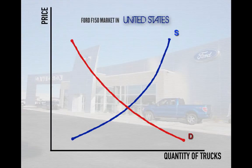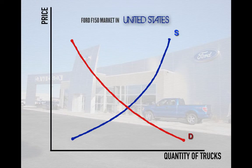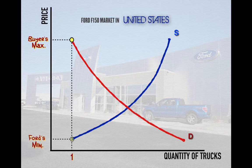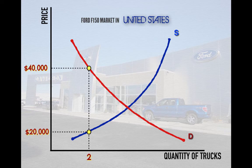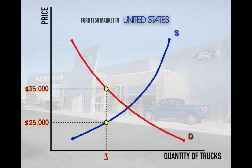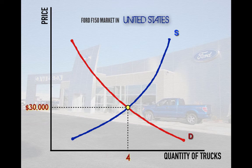Just as in the factor market, voluntary exchange sets price and quantity in the product market. In the Ford F-150 example, the buyer wants the lowest price and Ford wants the highest. Negotiations begin with Ford offering $40,000 and the buyer offering $20,000. Continuing to $35,000 and $25,000 respectively, an equilibrium price is agreed upon at $30,000. Across all consumers in the market at that equilibrium price, Ford will be able to sell four trucks.